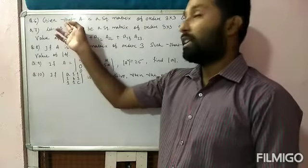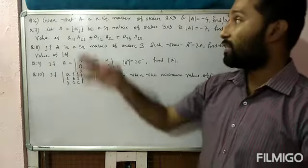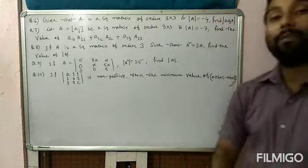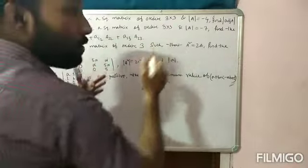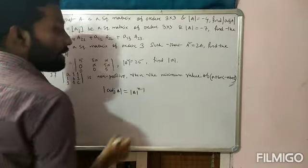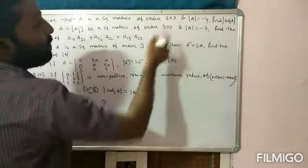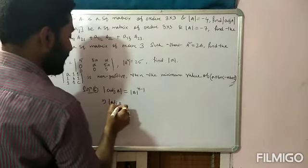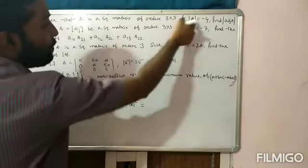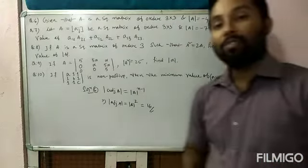Question 6: given A is a square matrix of order 3 and det(A) = −4, find the value of det(adj A). We know det(adj A) = (det A)^(n−1). Here n = 3, so det(adj A) = (det A)² = (−4)² = 16.